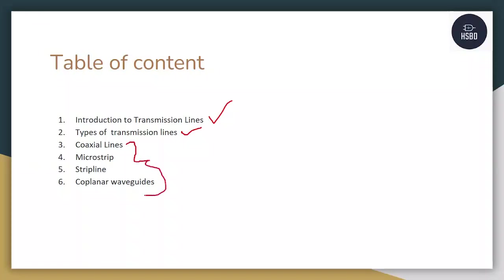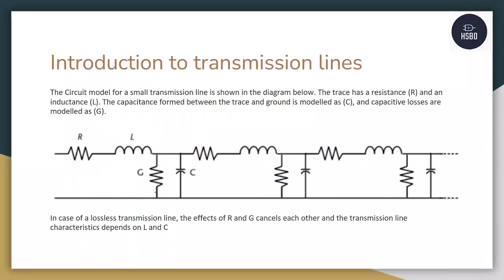This is the introduction to transmission lines. The circuit model of a transmission line can be created in the form of RLGC, where R is the resistance of the transmission line, L is the inductance, C is the capacitance across the transmission line and the ground, and G is the conductivity.